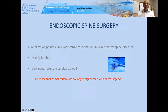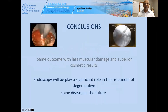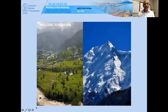Endoscopic spine surgery has application in a wide range of indications in degenerative spine disease, mainly lumbar, but it has also been used in the cervical spine with very good results. Evidence shows the complication rate is no higher than with microscopy. Reduced muscle trauma through the sheath system — the smaller the working sheath, the smaller the trauma and soft tissue damage, and the higher the necessity for endoscope application. Same outcomes with less muscular trauma and superior cosmetic results. Endoscopy will play a significant role in the treatment of degenerative spine disease in the future.